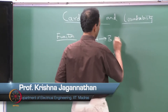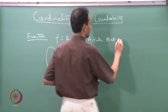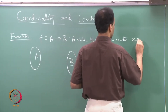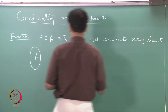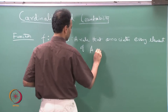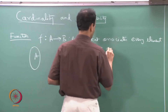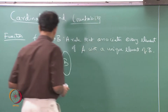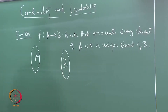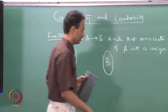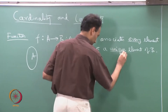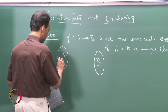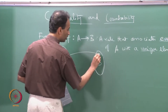This is a rule that associates every element of A with a unique element of B, so there are two key words here: every and unique. For every element of A, there is a unique element of B associated with it.